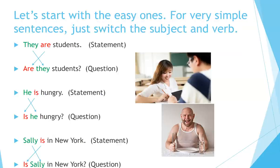Let's start with the easy ones. For very simple sentences, just switch the subject and verb. For example, for the statement 'They are students,' you make the question 'Are they students?' 'He is hungry' becomes 'Is he hungry?'